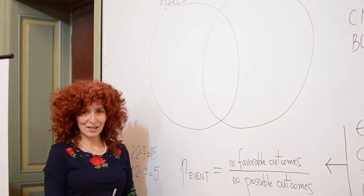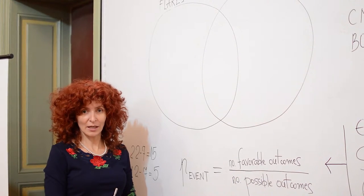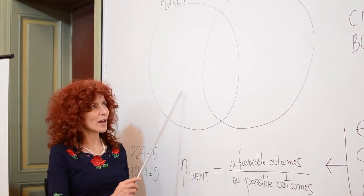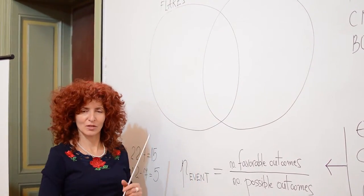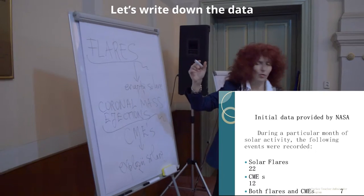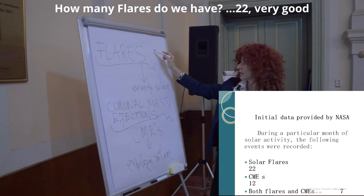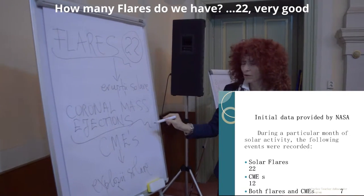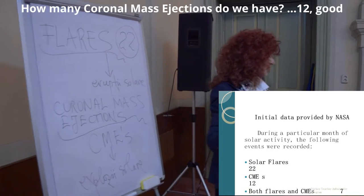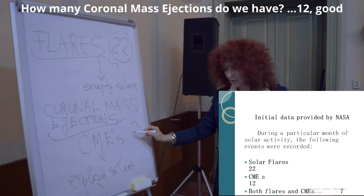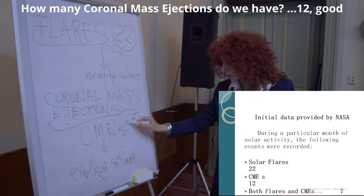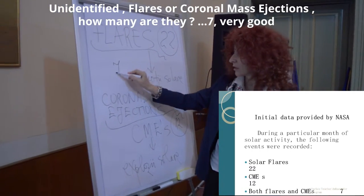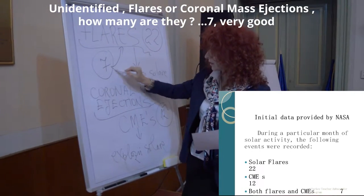I gave the students a hint to use the Venn diagram. Let's note the data. How many solar flares did we have in the problem? 22. How many coronal mass ejections did we have? 12. And how many in common? 7.